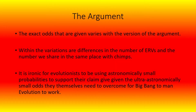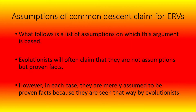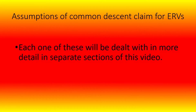The exact odds given vary with the version of the argument. Also within the variations are differences in the number of ERVs and the number we share in the same place with chimps. It is ironic for evolutionists to be using ultra-small probabilities to support their claim, given the ultra-astronomically small odds they themselves need to overcome for Big Bang to Man evolution to work. What follows is a list of assumptions on which this argument is based. Each one of these will be dealt with in more detail in separate sections of this video.